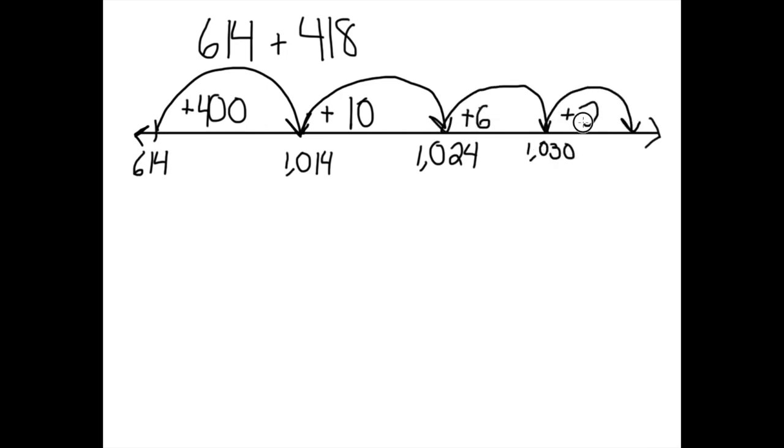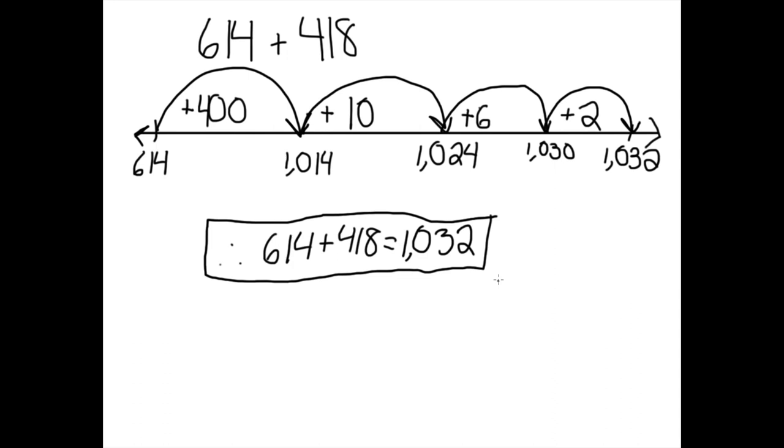Finally, we added 2, which brought us to 1,032 on our number line. That is how we chose to solve 614 plus 418 using an open number line. You can jump different units than we did, but we chose these units to make it easier to add in our heads. See you next time!